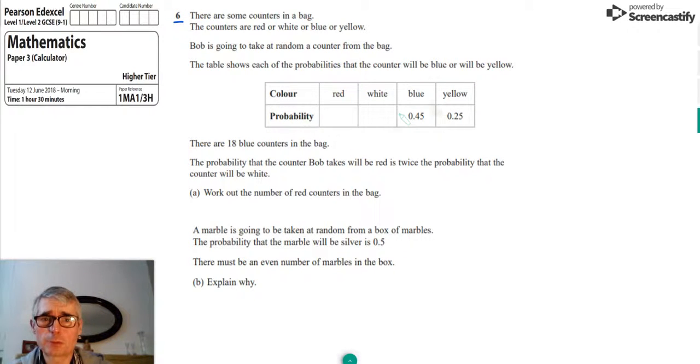So this is a question about probability. We're given a table of probabilities here, and it's about a bag containing some counters which are either red, white, blue or yellow. Bob is going to take a random counter from the bag, and the table shows the probabilities that the counter will either be blue or yellow.